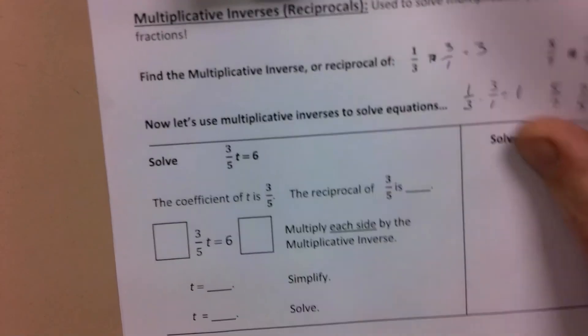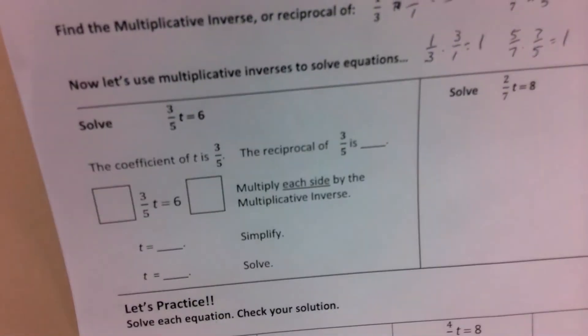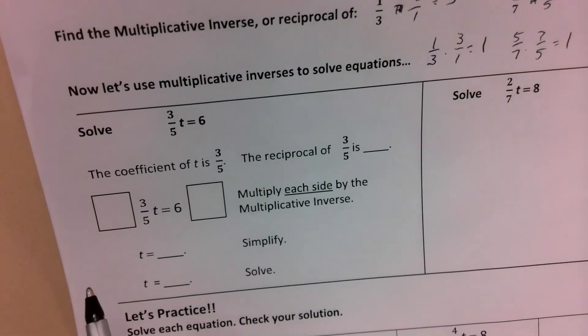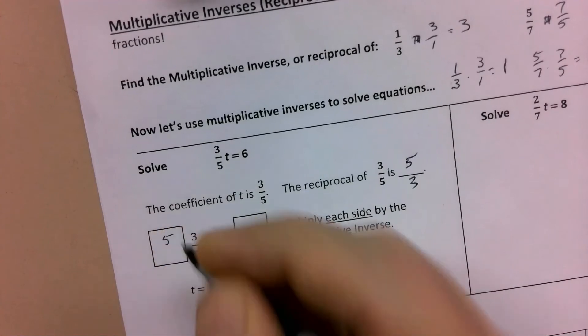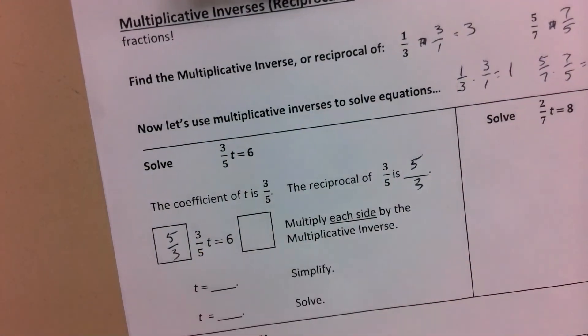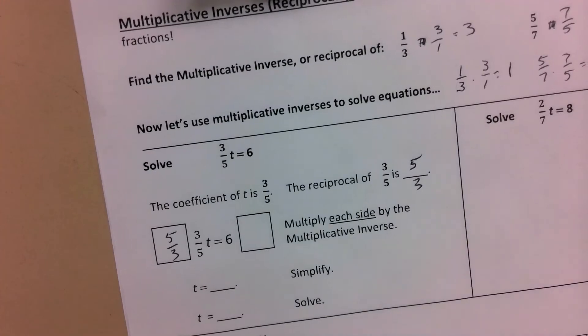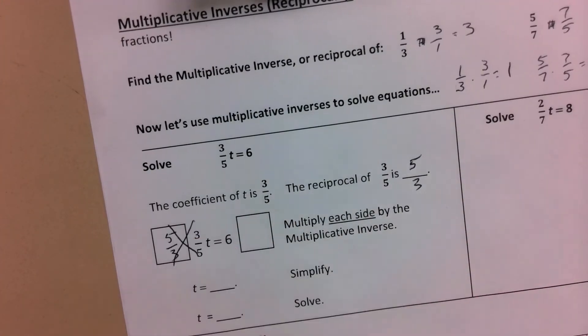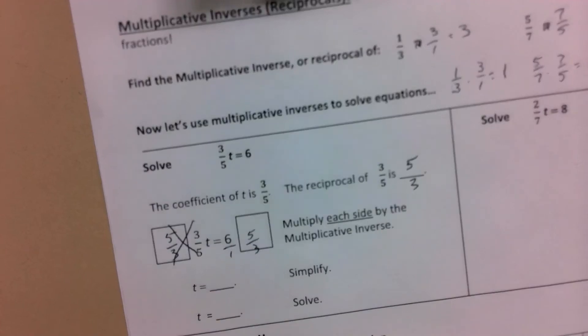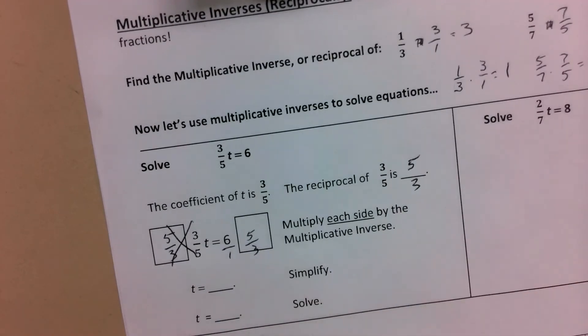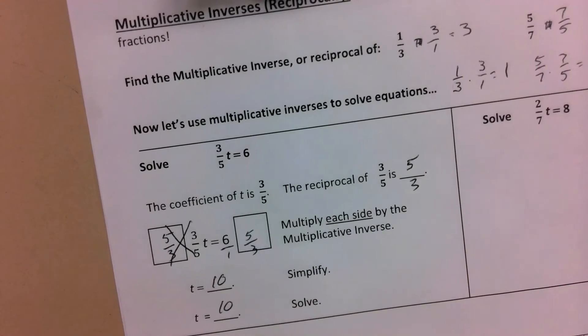So here's your first one that I'm going to work through with you. So three fifths T times three fifths of T equals six. Well, if we use this, well, the reciprocal is five thirds. So if I just take five thirds times three fifths. Well, those cancel out. Those equal one. So those just cancel all out. And all I have to do is just do it to the other side. Six over one times five over three. What is that? Thirty over three. T is equal to ten. So three fifths of ten is equal to six. T is equal to ten. That's how you do it.